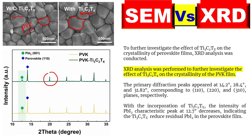How do we know that? We know from the main peaks. For example, one peak here, another peak here, and another peak here — labeled 110, 220, and 310. They are located at 14.2 degrees, 28.4 degrees, and 31.82 degrees respectively.